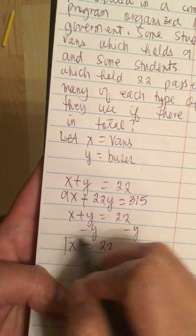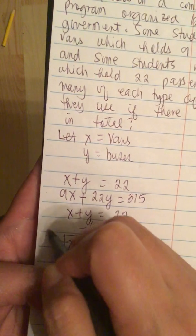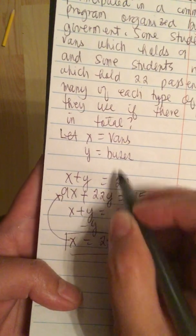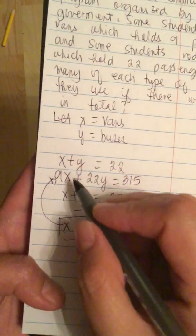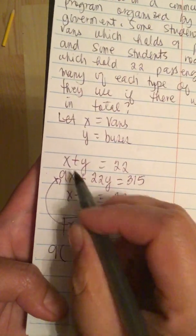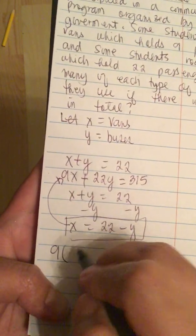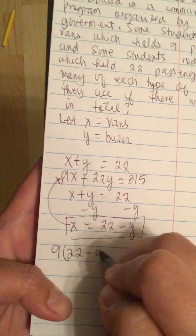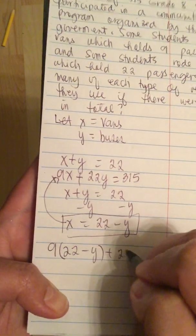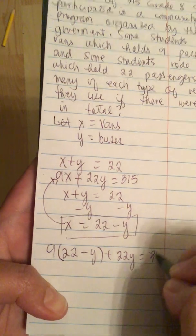So now we use this equation to find buses. We have 9 times x. x is equal to this. So 9 times 22 minus y plus 22y is equal to 315.